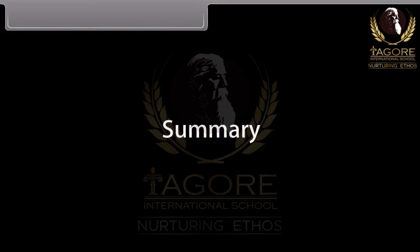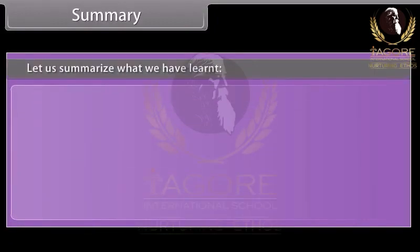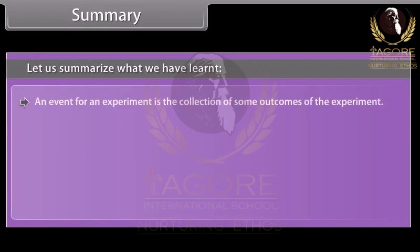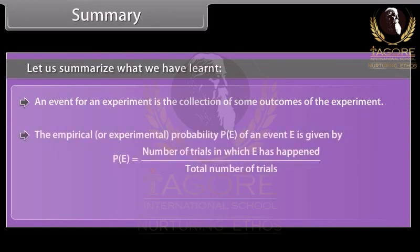Summary. Let us summarize what we have learnt. An event for an experiment is the collection of some outcomes of the experiment. The empirical or experimental probability P(E) of an event E is given by P(E) equals number of trials in which E has happened upon total number of trials. The sum of all the probabilities is 1.